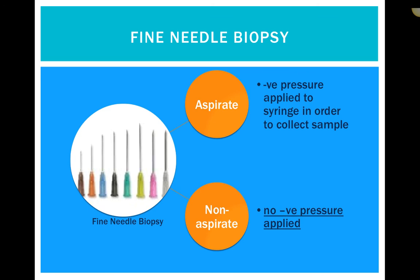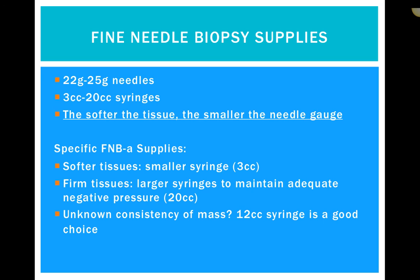For the aspirate technique, supplies include a 22 to 25 gauge needle and a 3 cc to 20 cc syringe. The softer the tissue, the smaller the needle gauge and the smaller the syringe. For softer tissues, a 3 cc syringe is typical — 1 cc syringes don't create enough negative pressure. For firm tissues, a larger syringe maintains adequate negative pressure, up to 20 cc. If tissue consistency is unknown or mixed, a 12 cc syringe is a good choice.